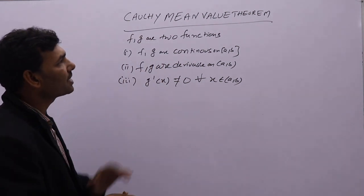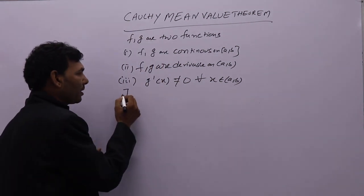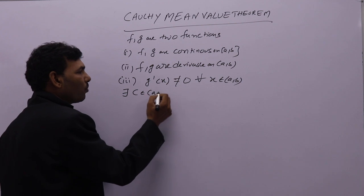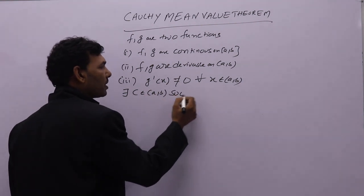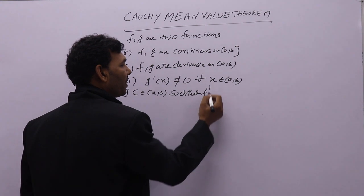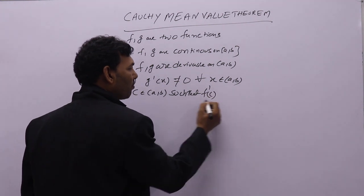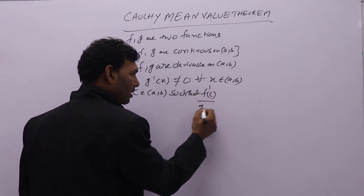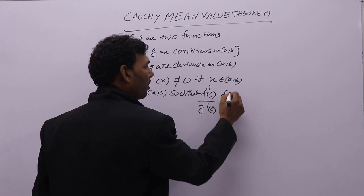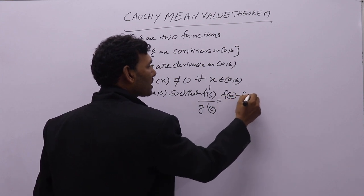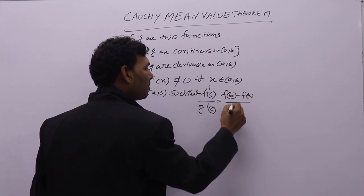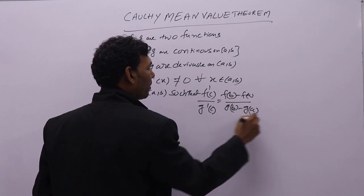f and g are derivable on open interval (a, b). And this condition should also be satisfied: g dash of x not equal to 0 for all x belonging to open interval (a, b). If these three conditions are satisfied, then there exists c in open interval (a, b) such that f dash of c divided by g dash of c equals f(b) minus f(a) divided by g(b) minus g(a).